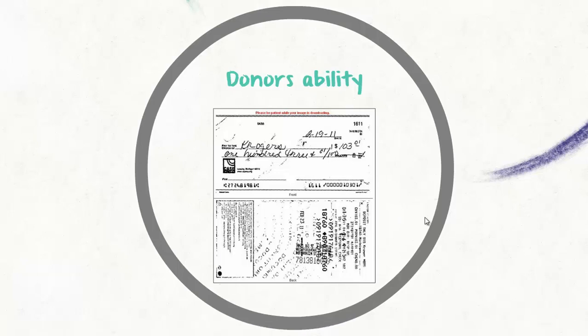The second way: if you receive funds via a wire directly into your account, we will need a transaction history showing the name of the donor, along with documentation that the funds have in fact drafted from their account, along with the new resulting balance. So if it's a $10,000 gift that you're receiving, for example, we will need to see the $10,000 drafting out of their account and the resulting balance once that $10,000 gift is drafted.